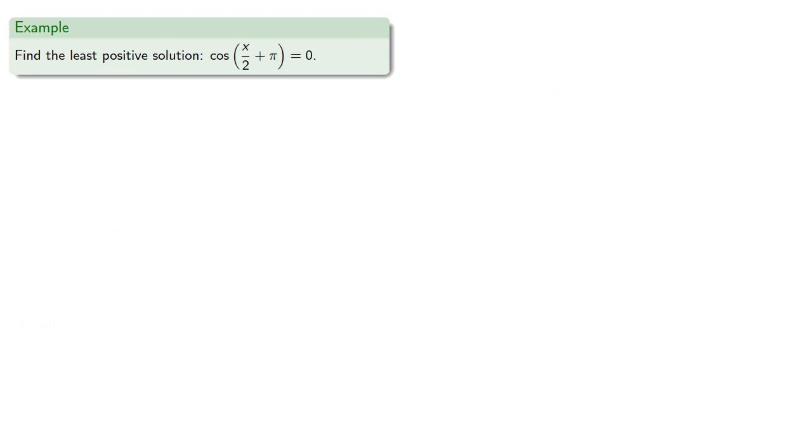Similarly, if we want to find the least positive solution of cosine of (x/2 plus pi) equals 0, one set of solutions to cosine equals 0 is equal to pi/2 plus 2pi k.